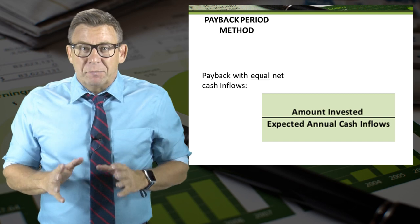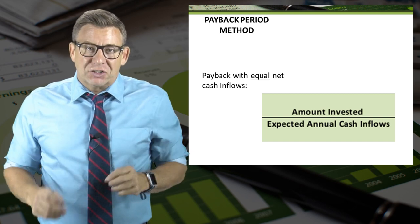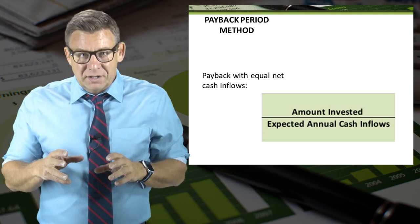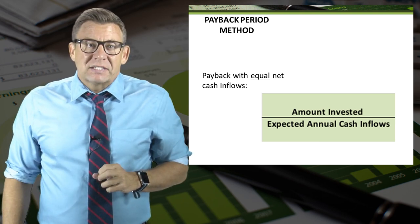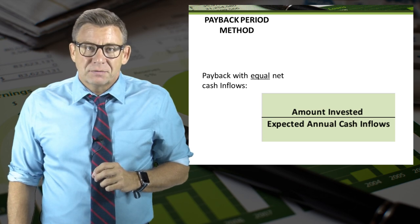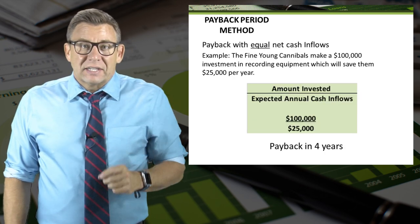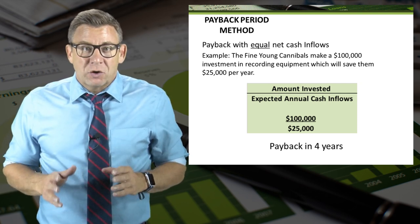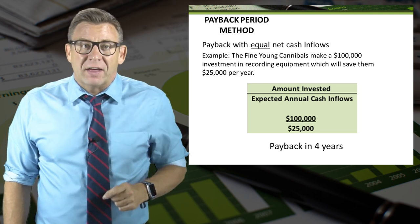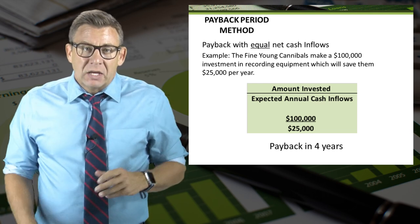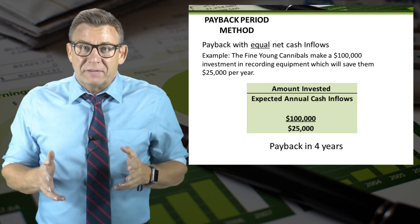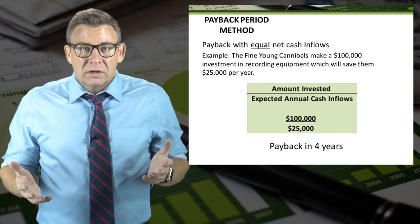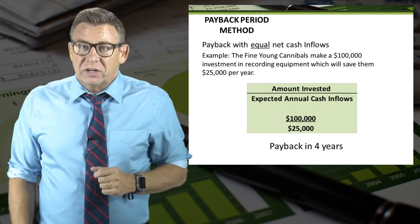The formula for calculating payback with equal net cash inflows couldn't be easier. It is the amount invested divided by the expected annual net cash inflows. For example, the Fine Young Cannibals make a $100,000 investment in recording equipment, which will save them $25,000 per year. So $100,000 divided by $25,000 equals four — it will take four years to recover the initial investment.